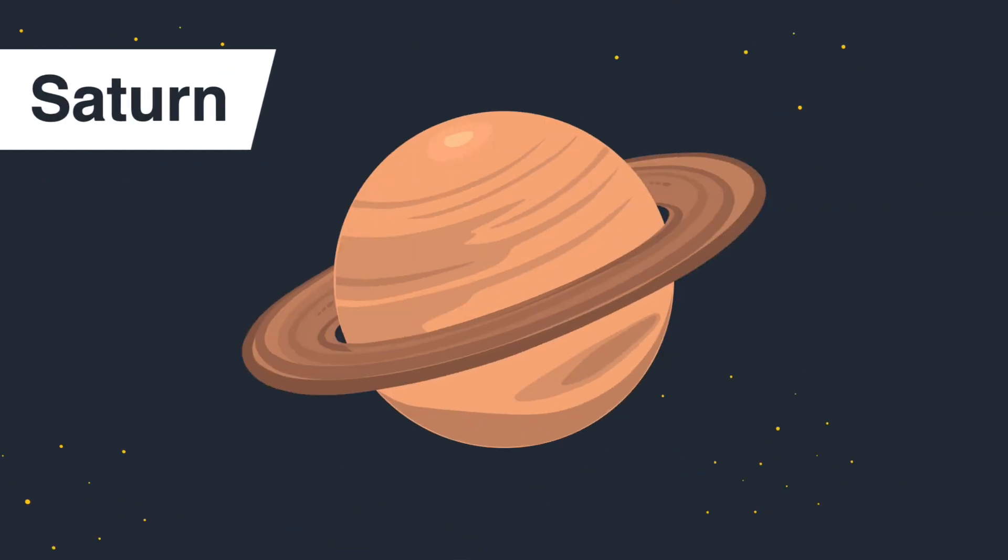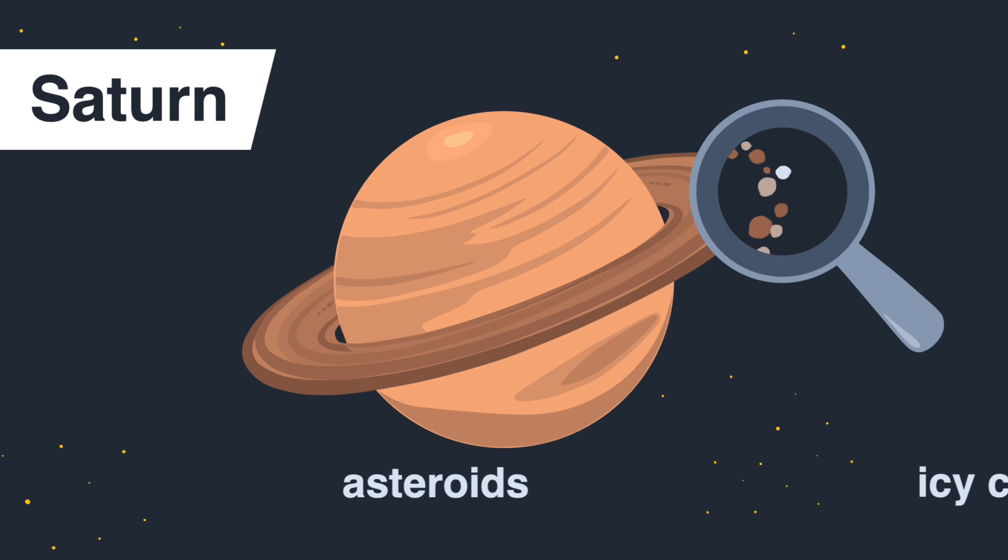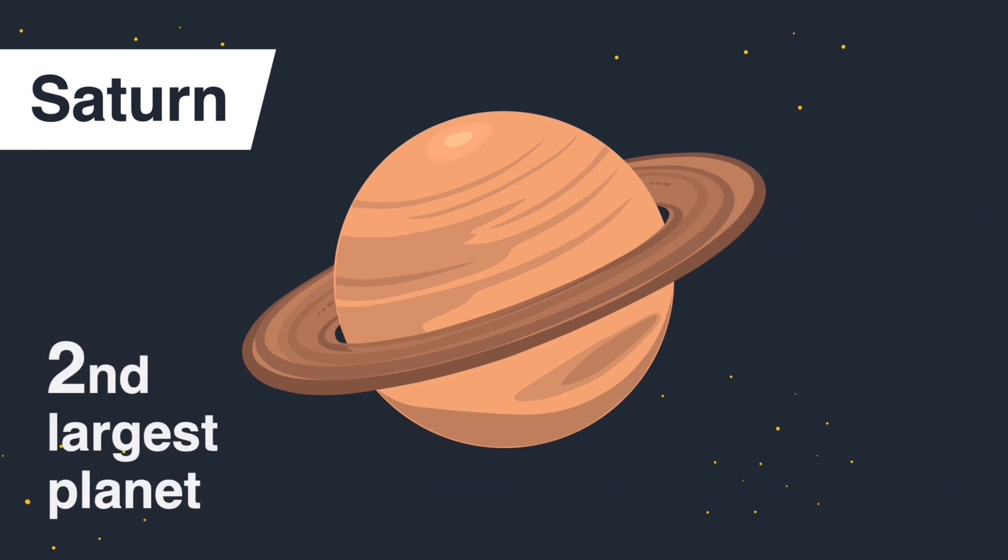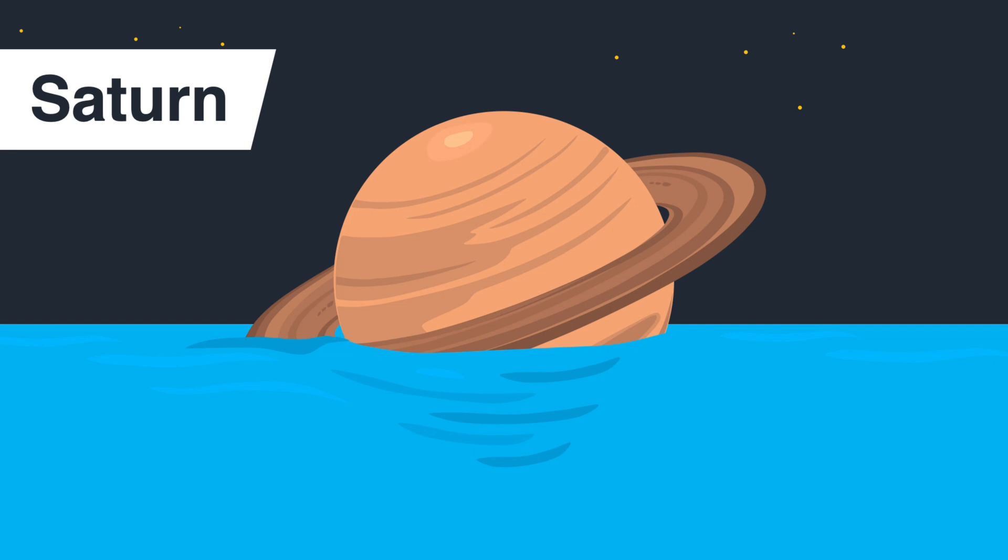Saturn is orbited by 146 moons. The planet is instantly recognizable for its stunning rings, composed of pieces of icy comets, asteroids and rock fragments. Saturn is the second largest planet in our solar system, but despite its vast size, it is remarkably light, with a density so low it would float in water. Because just like Jupiter, Saturn is made mostly of hydrogen and helium as well.